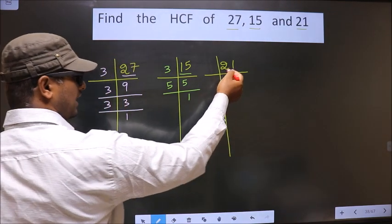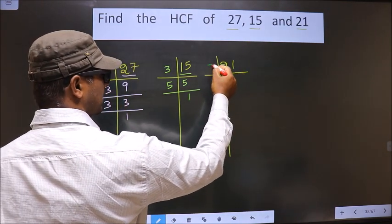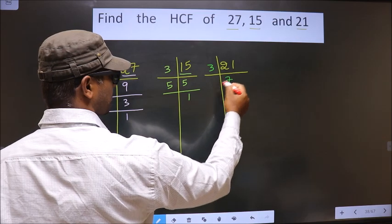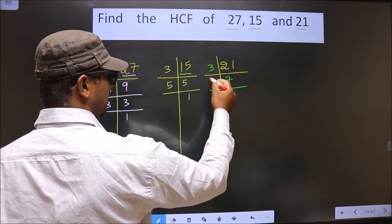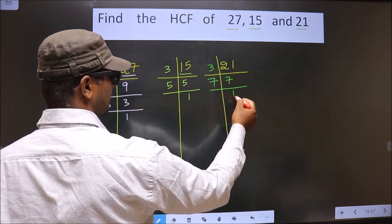Now here we have 21. 21 is nothing but 3 times 7. Now 7 is the prime number so we take 7 and 1.